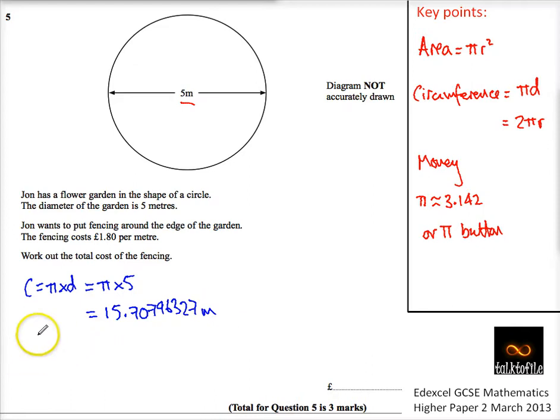So therefore, the cost, well, I've got to multiply that by £1.80. So therefore, the cost is equal to my answer times £1.80. So times my 1.8 on my calculator, and I get the answer, £28.27433388, and so on and so on.